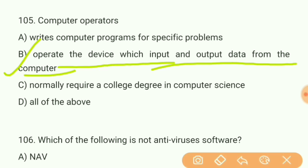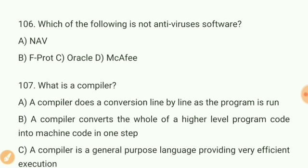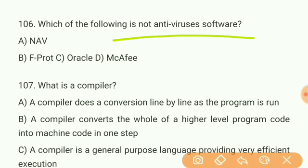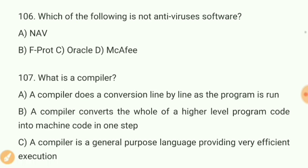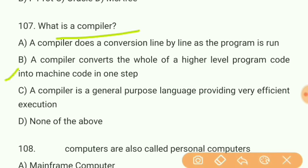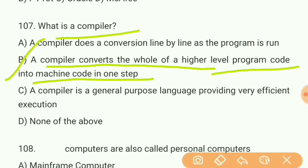Question 105: Computer operators — answer B — operate the devices which input and output data from the computer. Question 106: Which of the following is not an antivirus software? The answer is C — Oracle. Oracle is not an antivirus software; the others are all antivirus software. Question 107: What is a compiler? The answer is B — a compiler converts the whole of a higher-level program code into machine language code in one step.